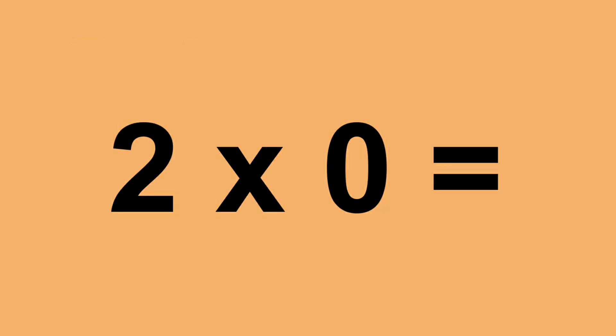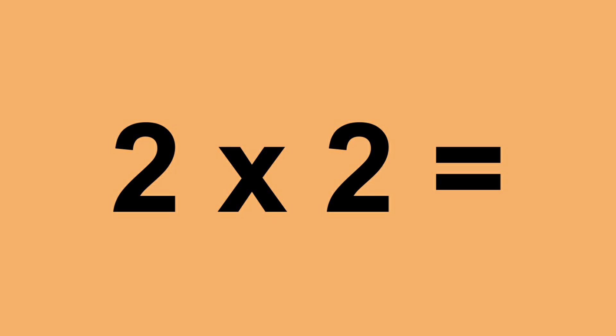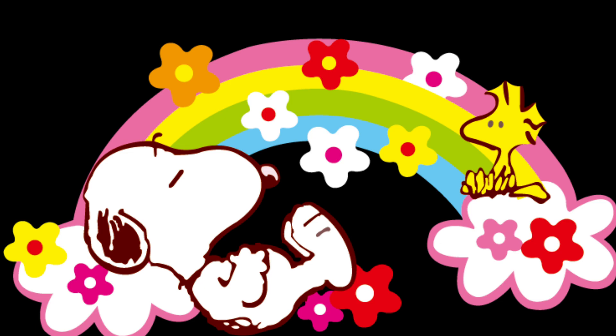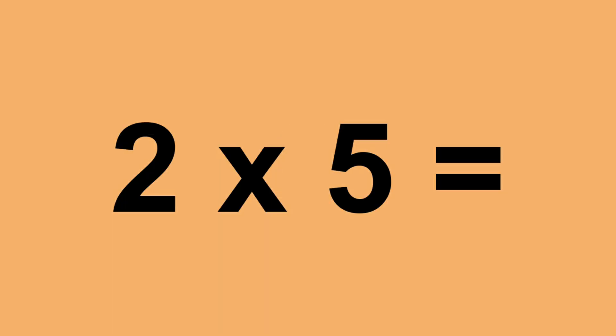2 times 0 equals 0. 2 times 1 equals 2. 2 times 2 equals 4. 2 times 3 equals 6. 2 times 4 equals 8. 2 times 5 equals 10.